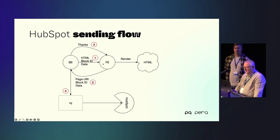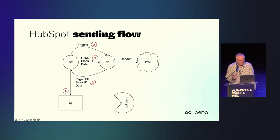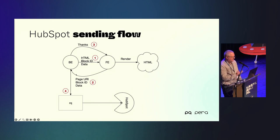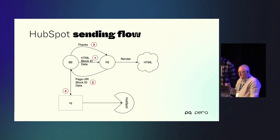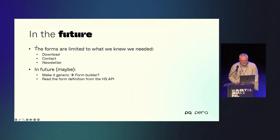In terms of flow: the back end sends the block ID and form structure data to the front end. The front end renders the form in some React code, then posts back to the back end which page it was and which block. The back end figures out what to do with it, puts it into the queuing system, and the queuing system sends it into the HubSpot CRM — capturing a new contact or a content download request.